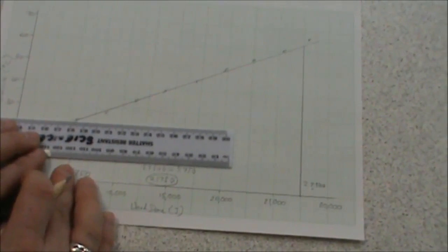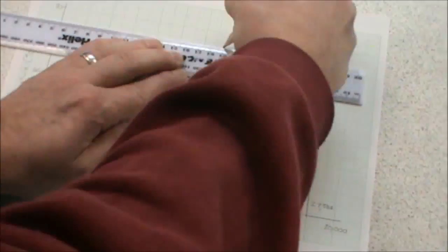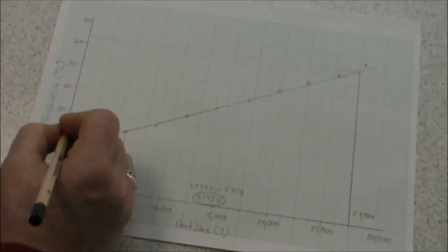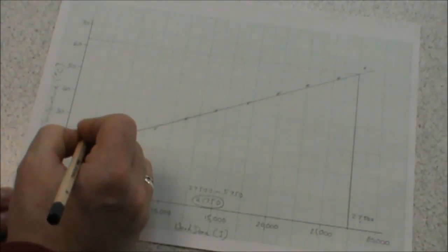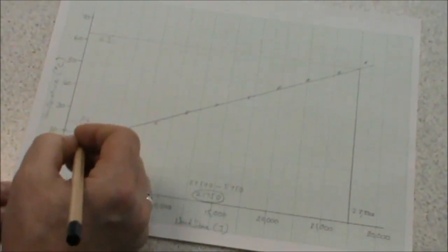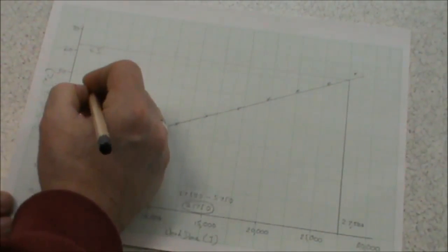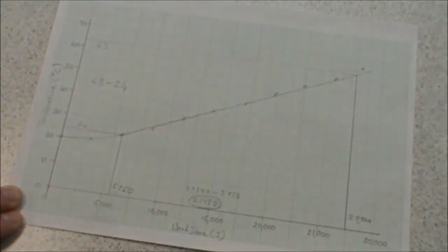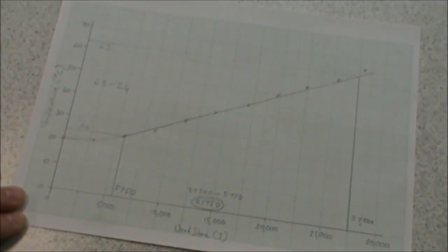Our y values we track across to the y-axis. We have a minimum value of 24. And a maximum value of 63. So our y value is 63 minus 24. This is 39.